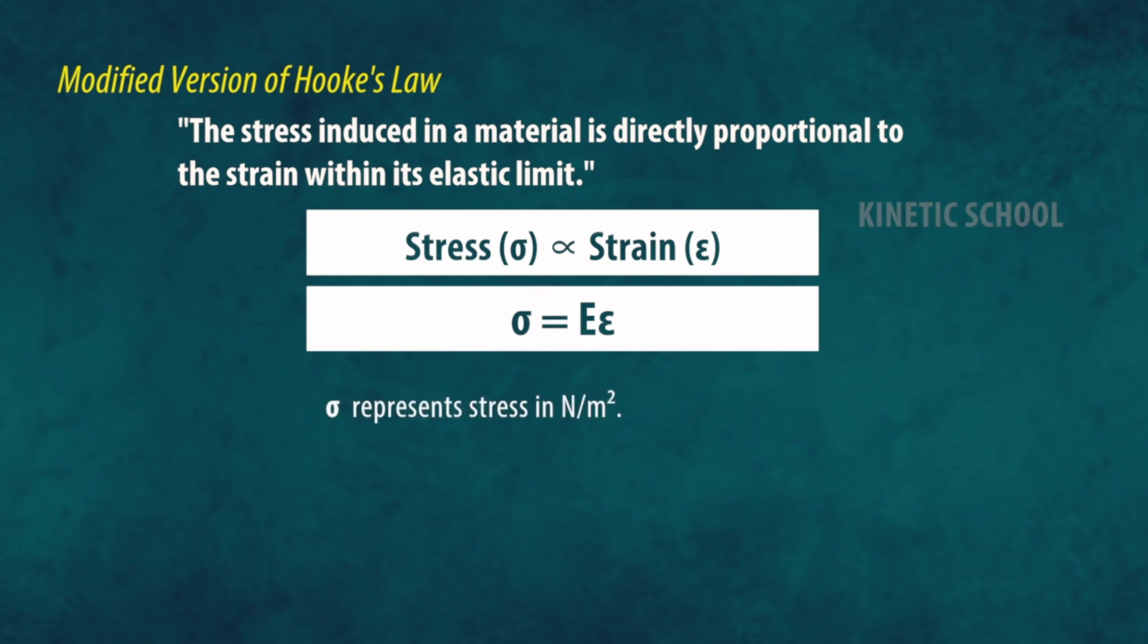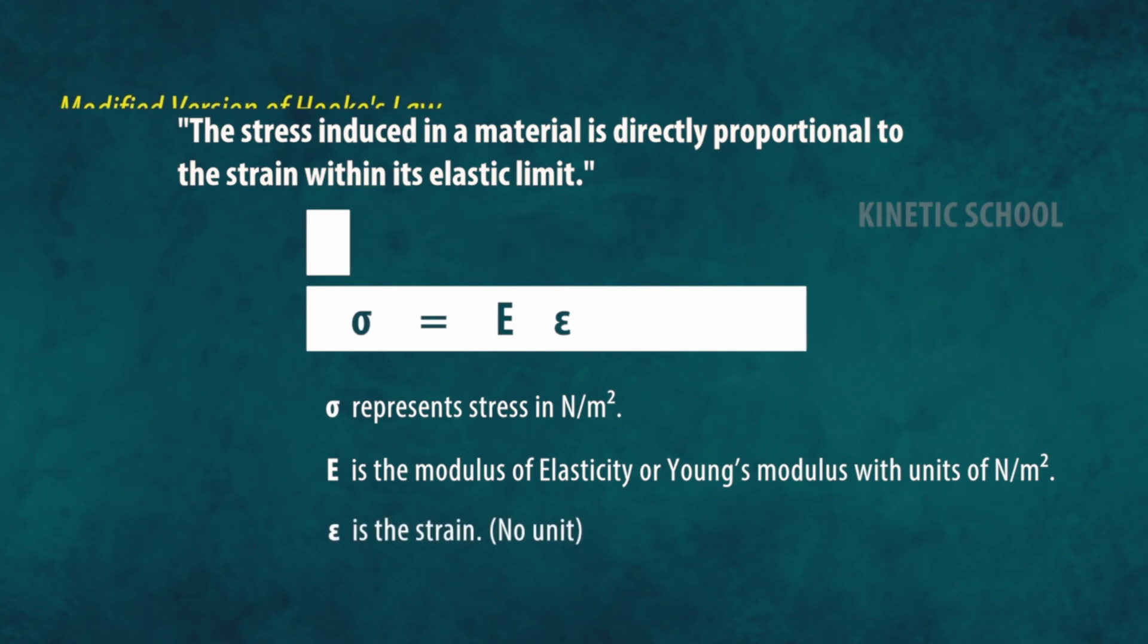Sigma represents stress in Newton per meter square. E is the modulus of elasticity or Young's modulus with units of Newton per meter square. Epsilon is strain and has no unit.